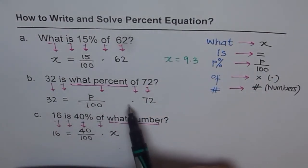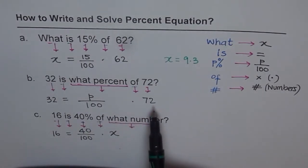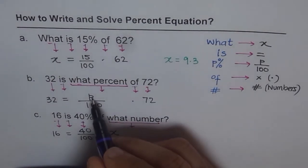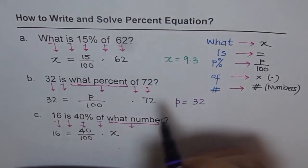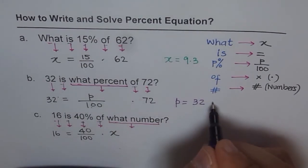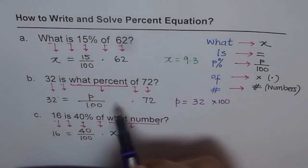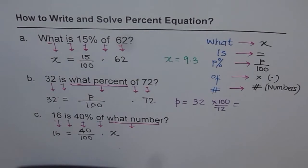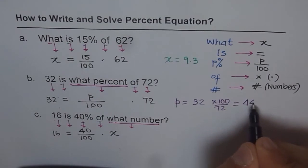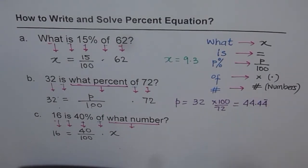32 equals P percent of 72. You need to rearrange this using cross multiplication technique. P you want to find. So we will say P equals to what? So 32 is on the other side. Cross multiply means if it is in the denominator, take it to the numerator. That means times it with 100. If it is a numerator, take it to denominator. So over 72. You multiply 32 by 100 and then divide it by 72 to get your answer, which is 44.44.